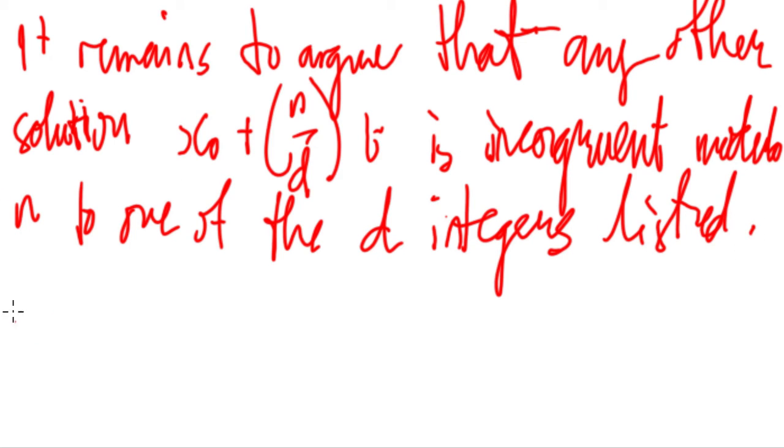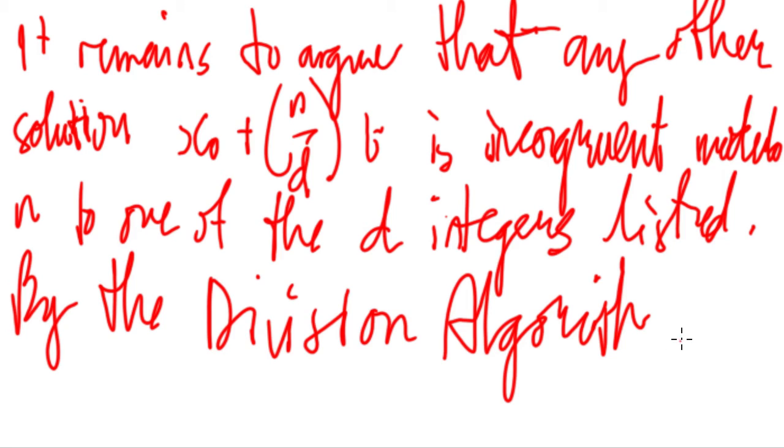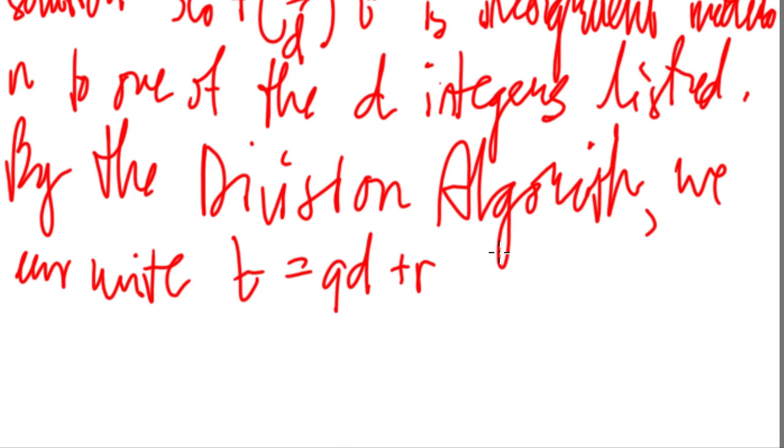So by the division algorithm, it permits us to write t as, we can write t equals qd plus r, by the division algorithm, where r is greater than or equal to 0, and r is less than or equal to d minus 1.